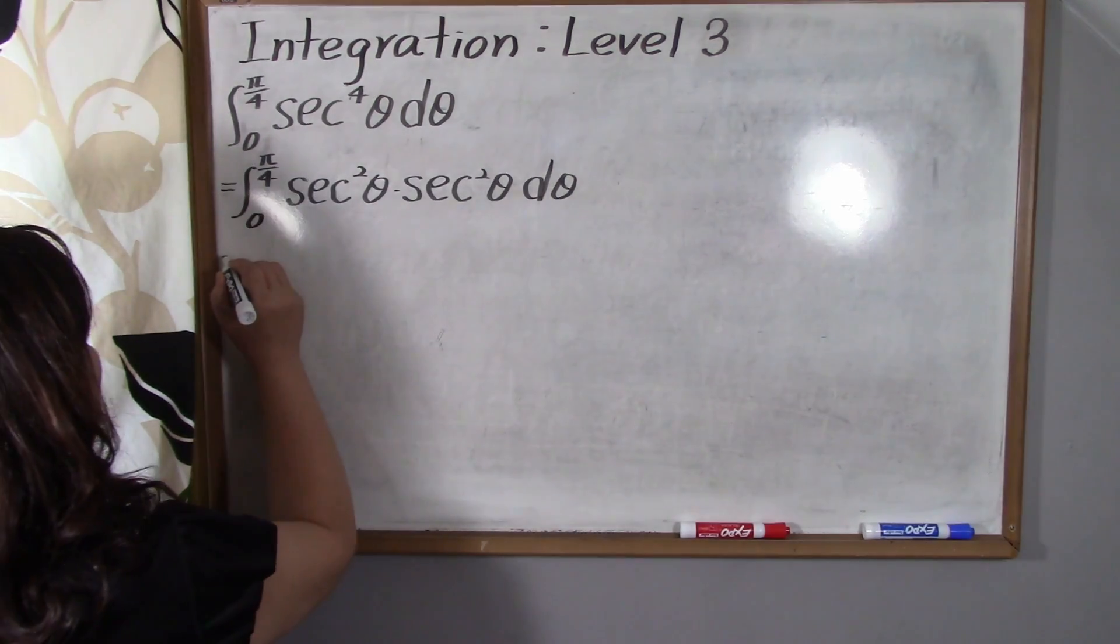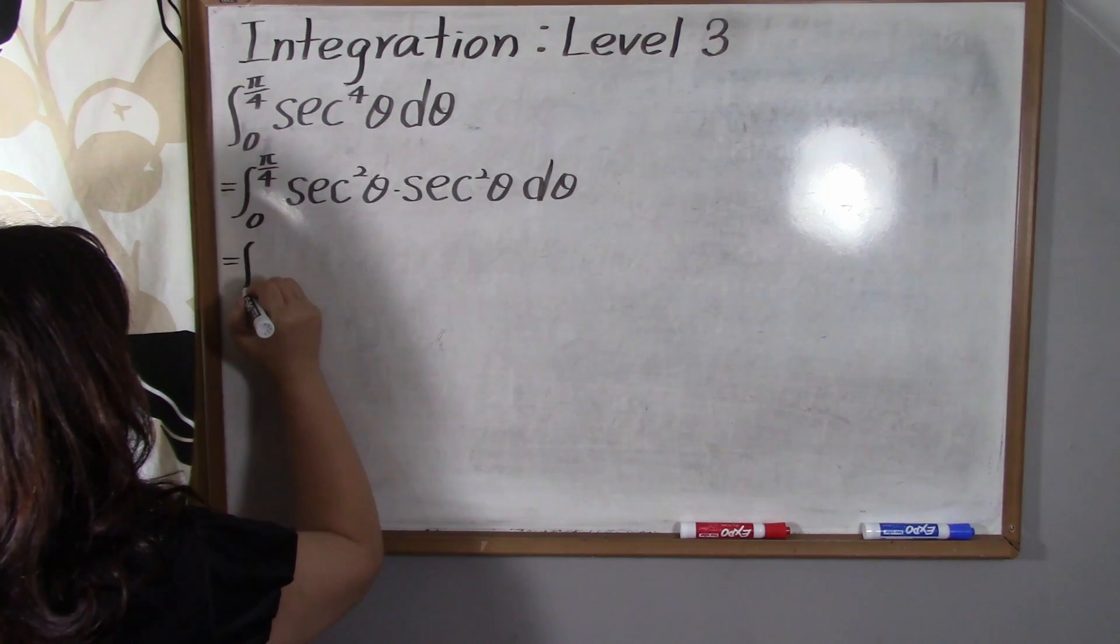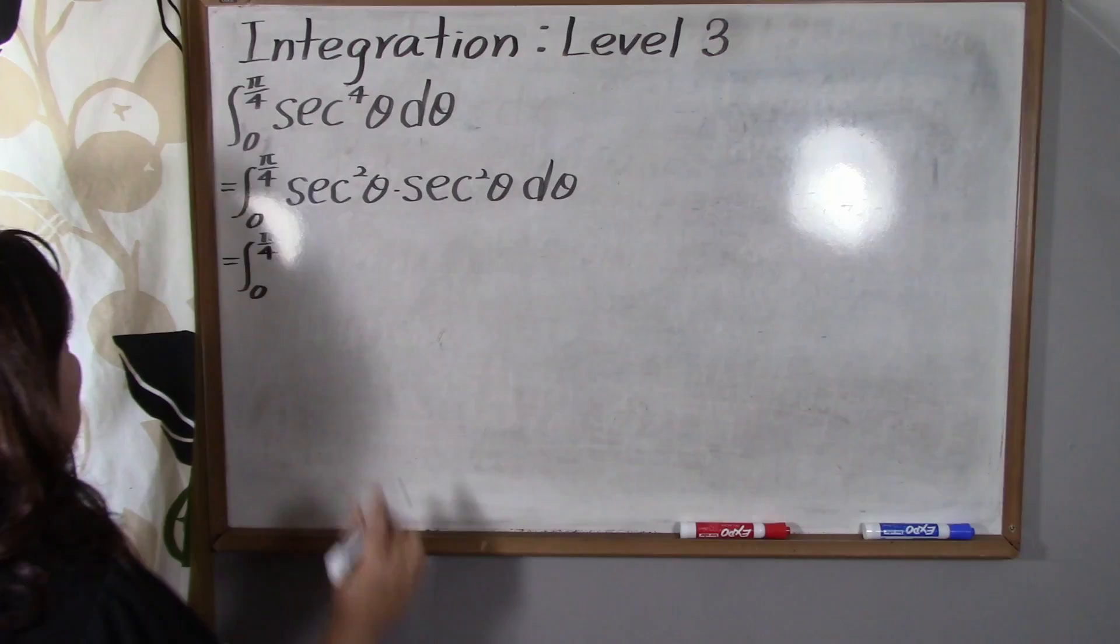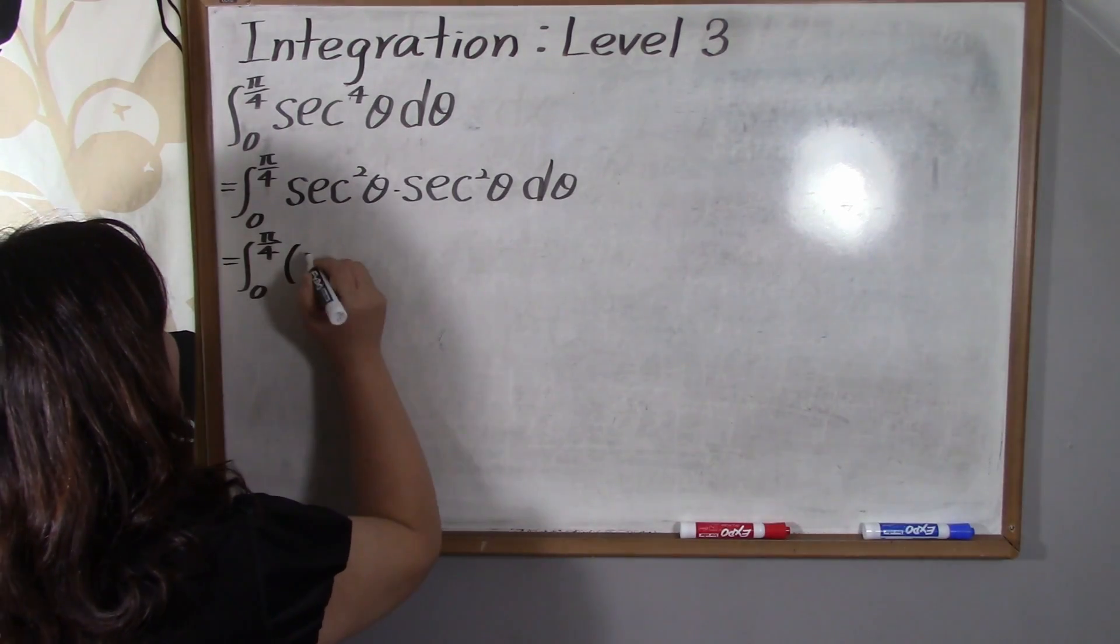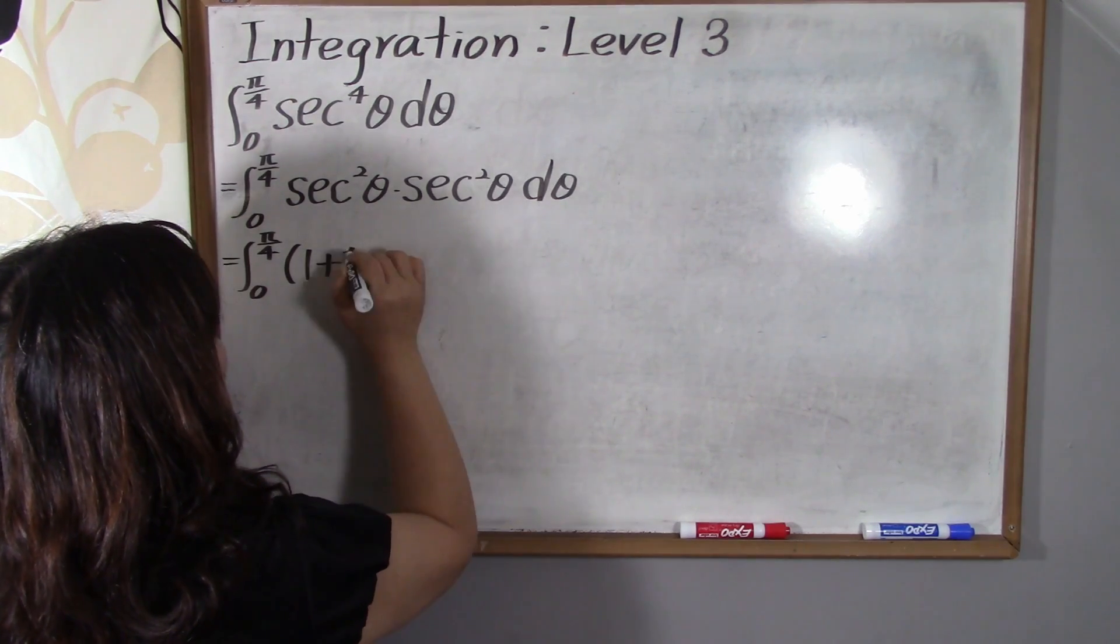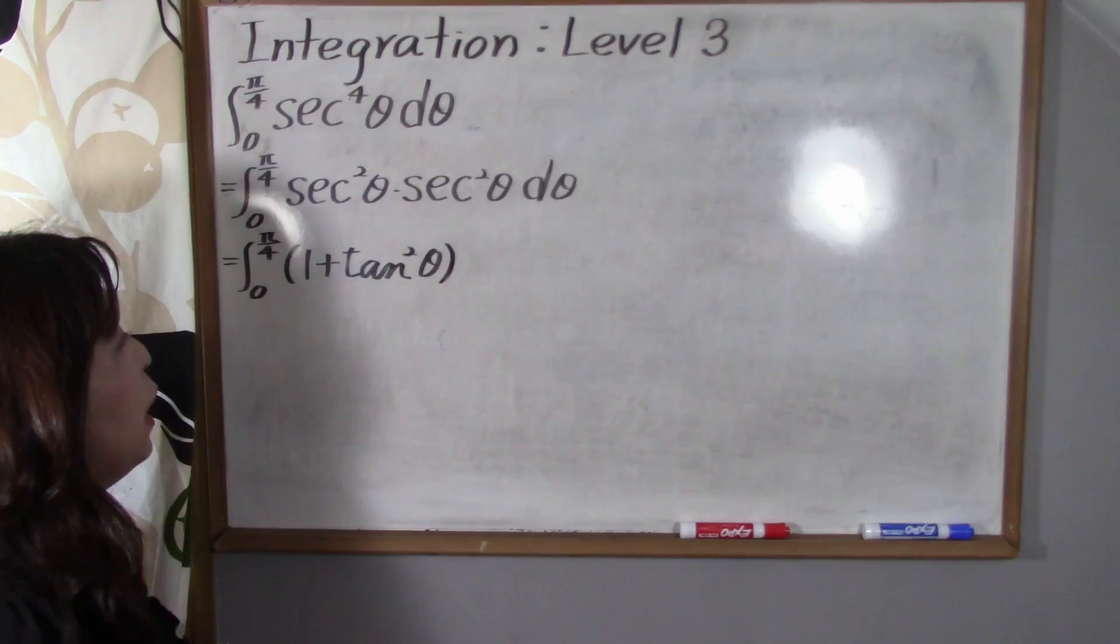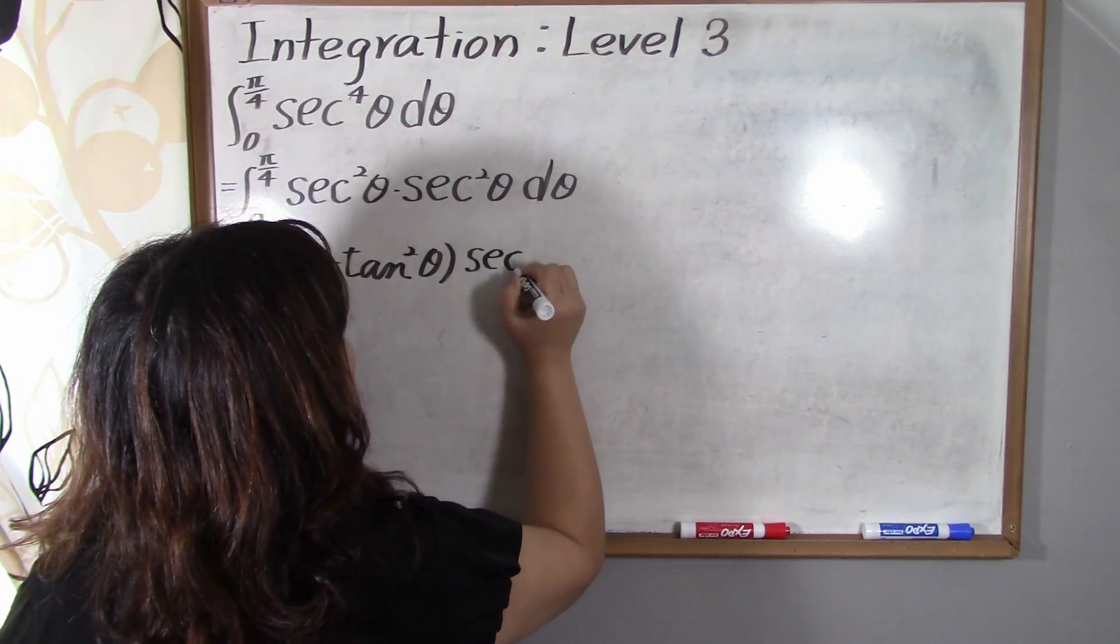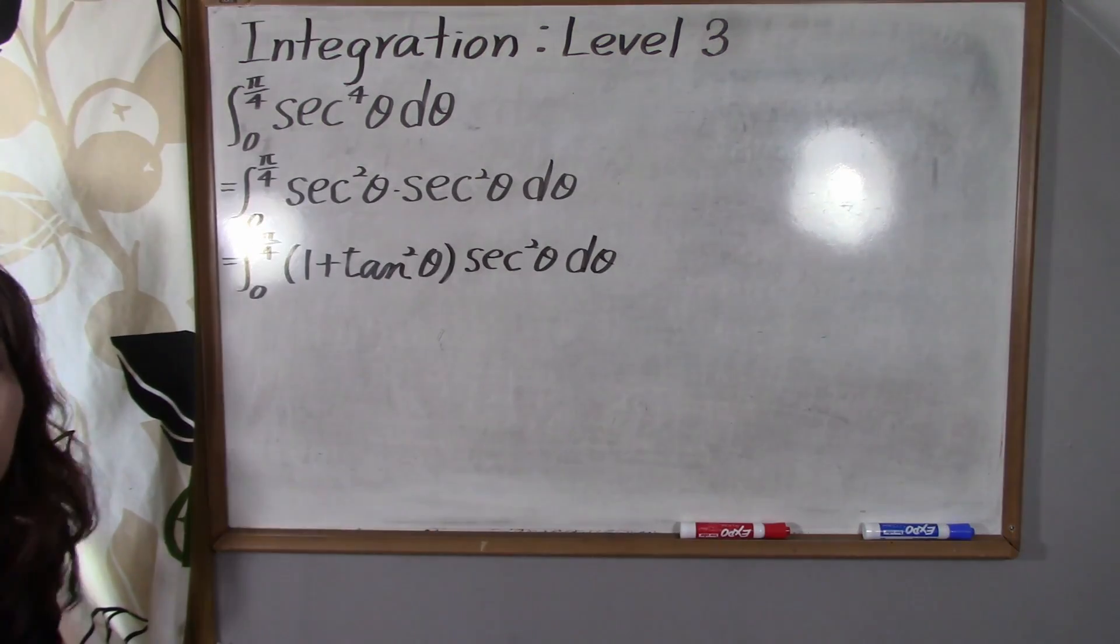And now, next we're gonna change secant squared of theta. So we're gonna change secant squared of theta into parenthesis 1 plus tangent squared of theta, and then times secant squared of theta d theta.